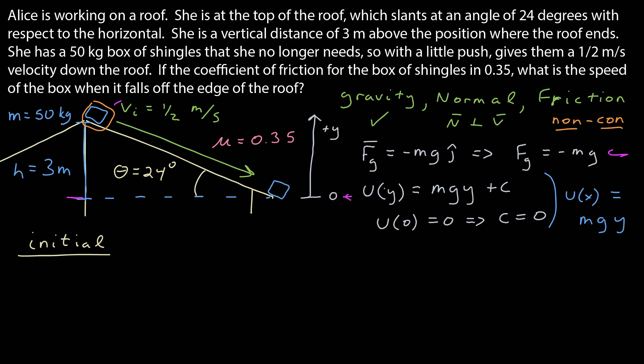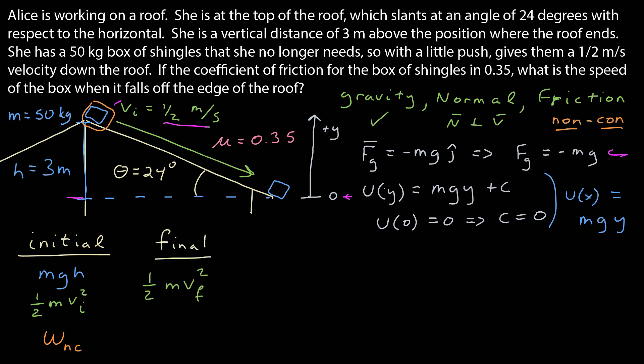Now I need to set up my initial and final energies. Initially, I have potential energy mgh, and it also has some initial kinetic energy one-half times mass times the initial speed squared. There's also work done by non-conservative forces that will subtract from that energy. In the end, the potential energy will be zero, so there will be some final kinetic energy one-half times mass times the final speed squared, which is what I want to find. I know h, v_i, and the mass, but I can't find the final speed yet because I don't know the work done by the non-conservative force of friction.